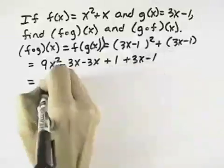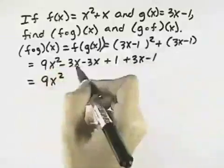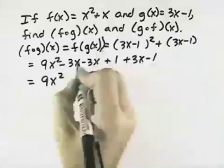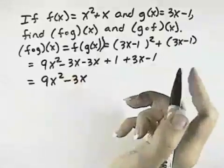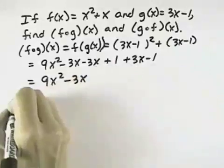And then we want to combine like terms, so we have 9x squared minus 3 minus 3 and plus 3 for all of our x terms gives us minus 3x plus 1 minus 1 cancels those out. So we just have 9x squared minus 3x.